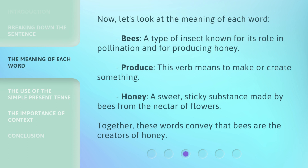Now, let's look at the meaning of each word. Bees: a type of insect known for its role in pollination and for producing honey. Produce: this verb means to make or create something. Honey: a sweet, sticky substance made by bees from the nectar of flowers. Together, these words convey that bees are the creators of honey.